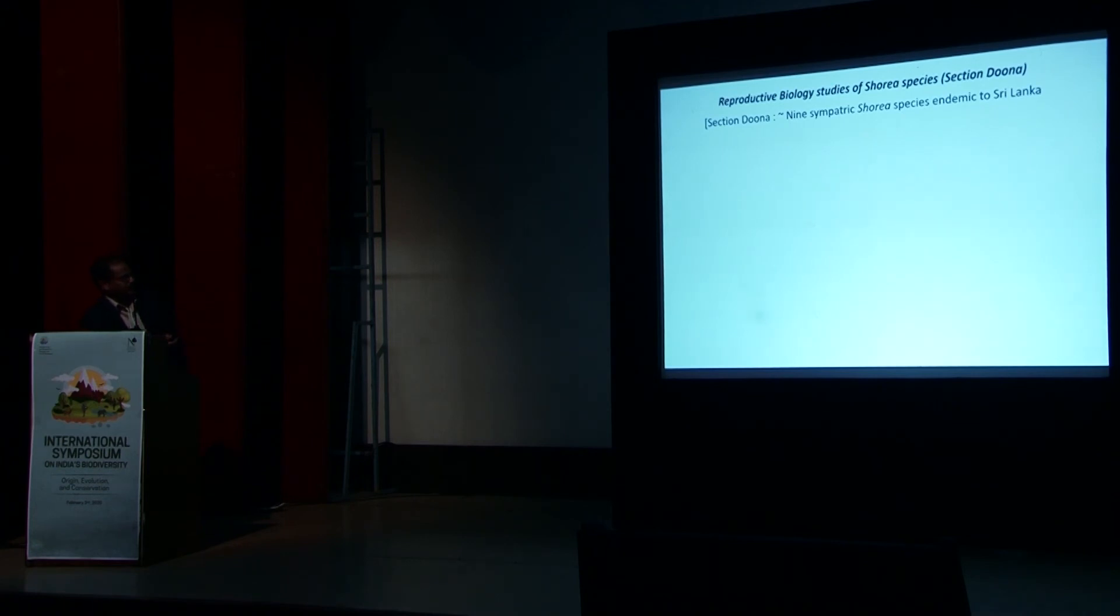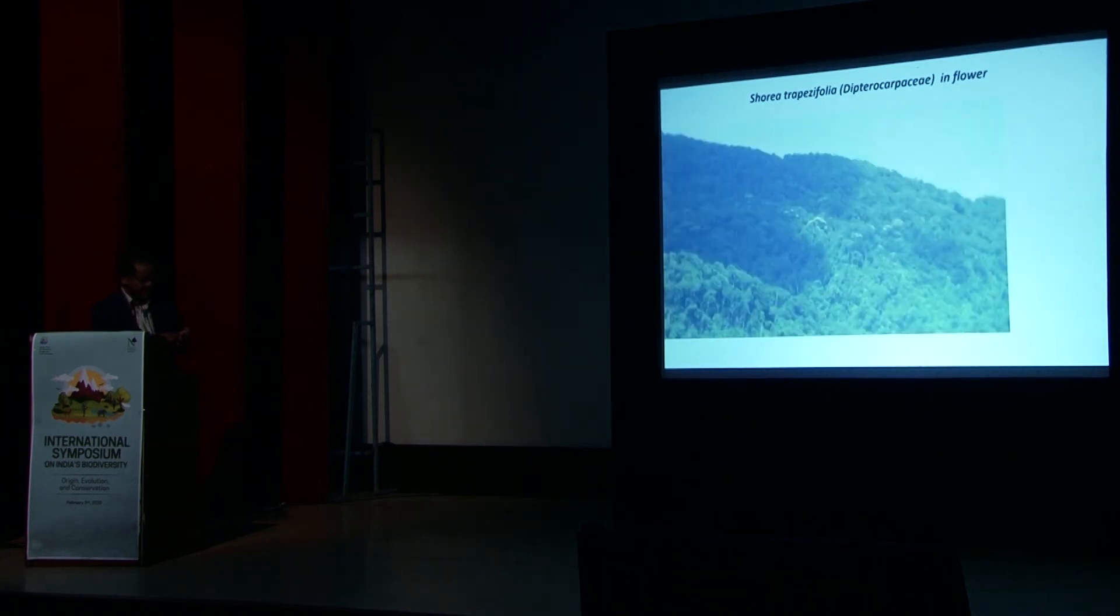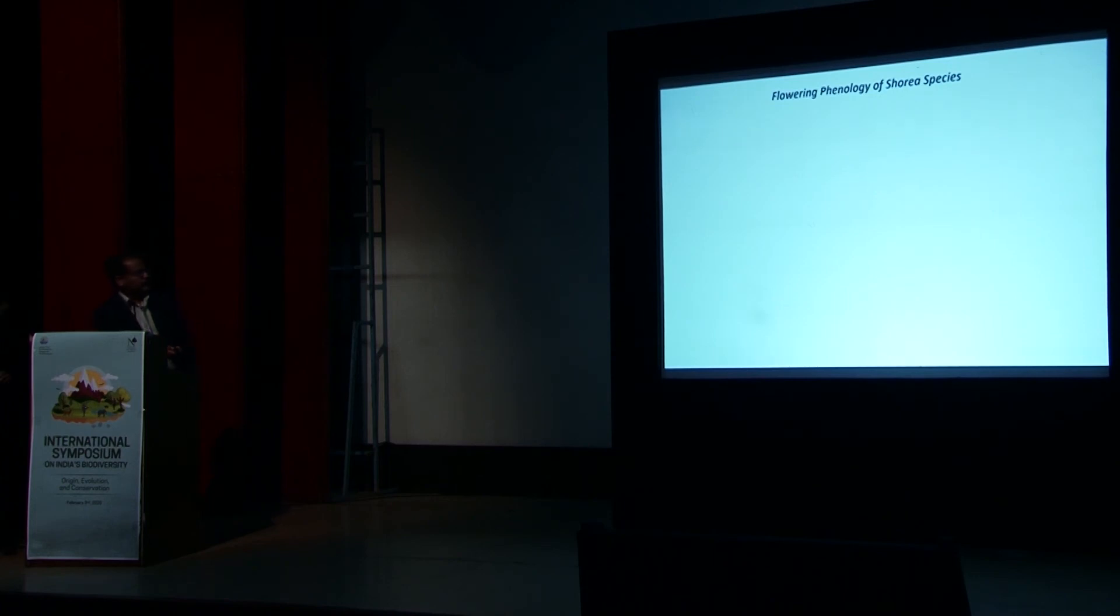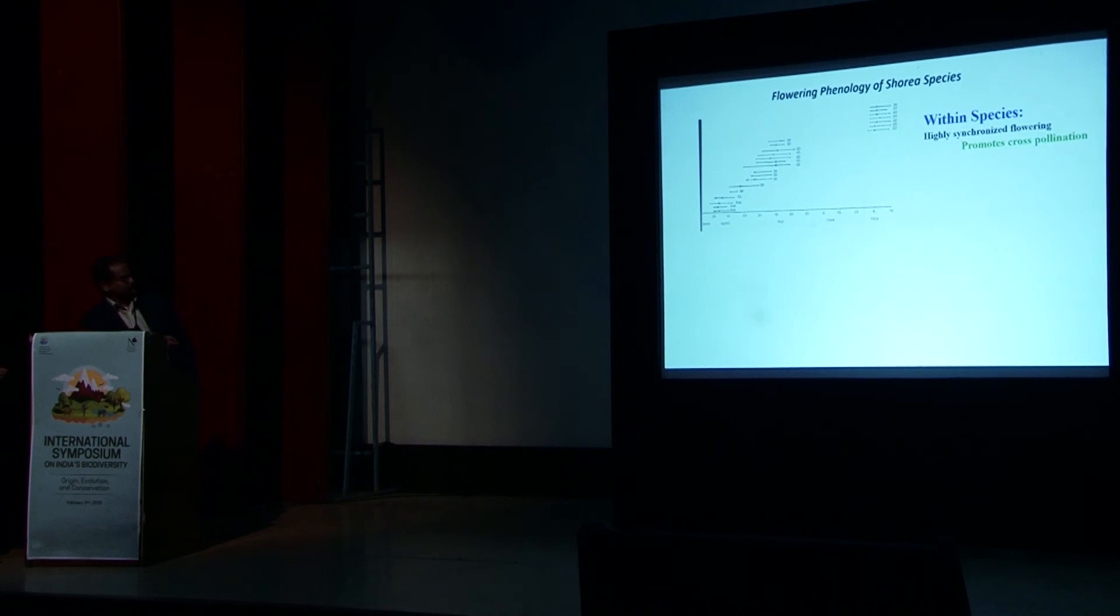So Section Doona is about nine sympatric Shorya species, endemic to Sri Lanka, and we did the reproductive biology studies. So flowering phenology of Shorya species. So within species, if you look at these are one species, another species, another species, within species, they are highly synchronized flowering. That means they can promote cross-pollination. And then these are between species. If you take one species, another species, another species, they are going to be staggered. That means they can minimize the competition for the pollinators. That means the pollination within those groups.